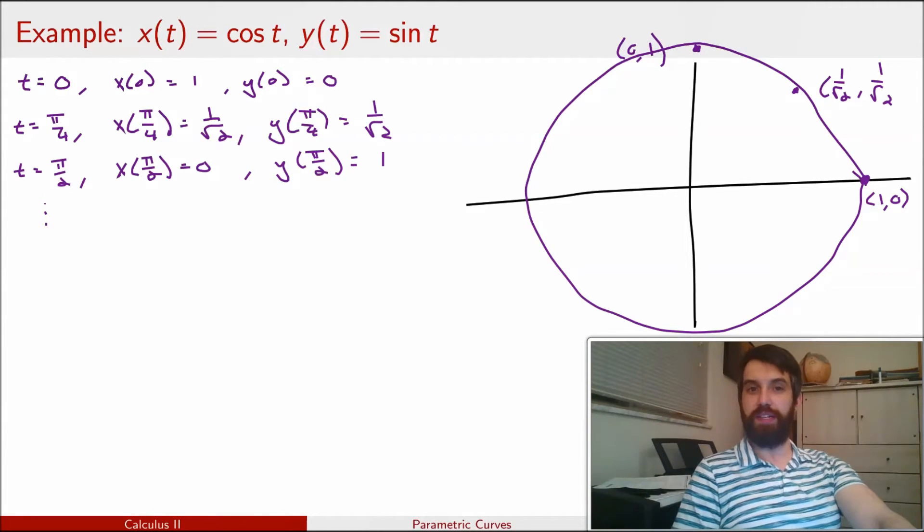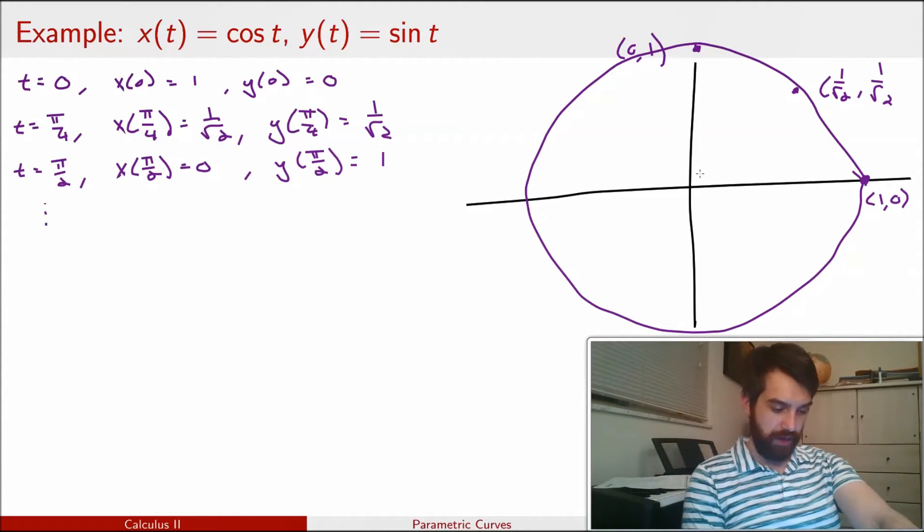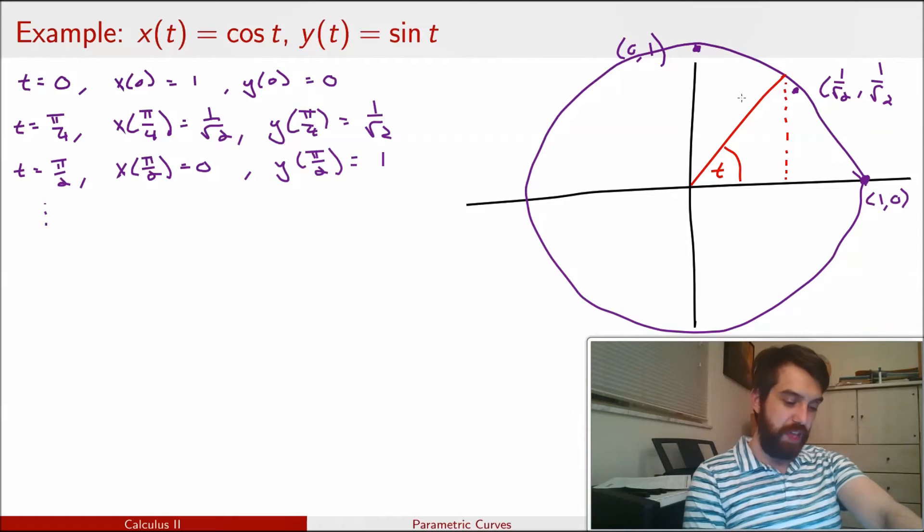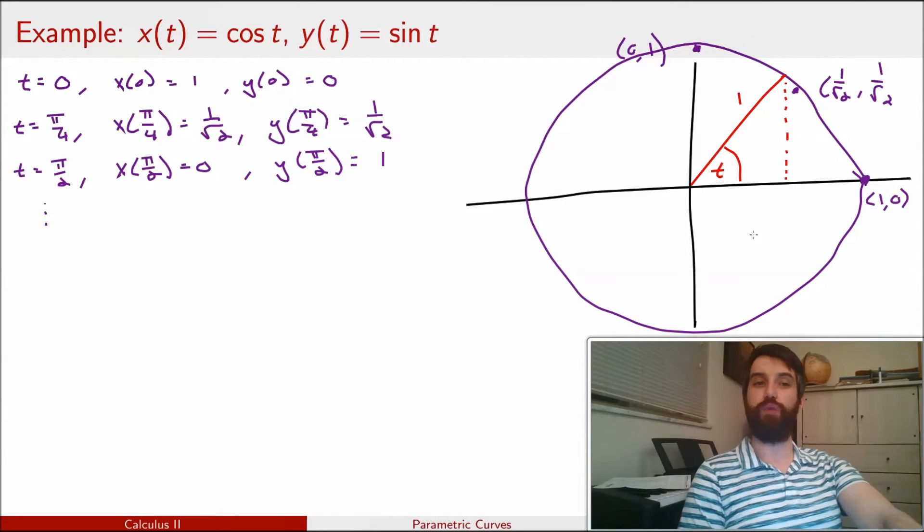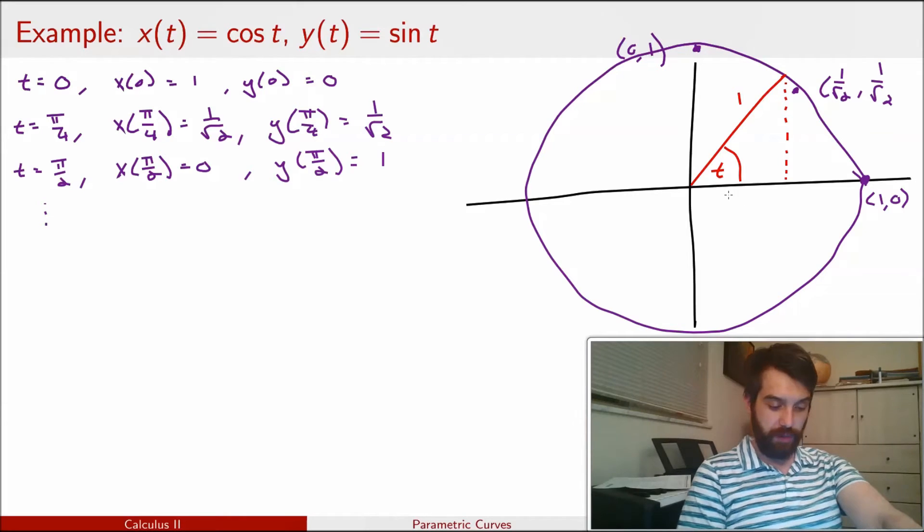Now you shouldn't believe me just from a couple different points, but consider how trigonometry was defined. If I have some angle, and typically we call this angle theta, but because I've written it as x of t and sin of t, I'm going to call this angle t. Then, if the hypotenuse is going to have length 1, then we know that the adjacent over the hypotenuse is cos theta, so the adjacent over 1 is going to be cos theta. That tells me that my x is going to be cos of t.